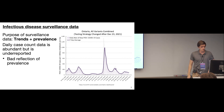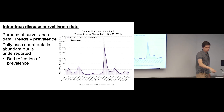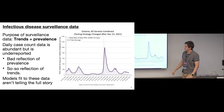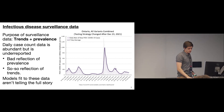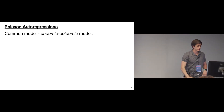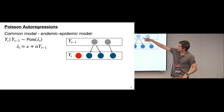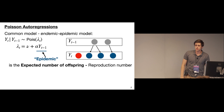Under-reported data are a poor reflection of prevalence and a so-so reflection of trend. A common class of models for this type of data are formally called Poisson auto-regressions, or in the infectious disease literature, endemic-epidemic models. The case count Y_t given previous cases is Poisson distributed with mean λ_t, which is the sum of an epidemic component and an endemic component.